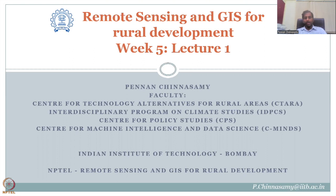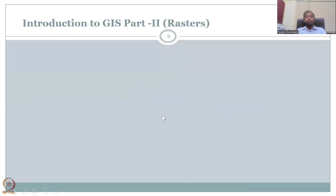Let us do a recap of what we have learned in Lecture 4 and how it is related to Week 5. In Lecture 4, we had done an introduction to GIS which was Part 1 — Vectors. In Lecture Week 5, we will be discussing more on rasters, which is the second type of data.